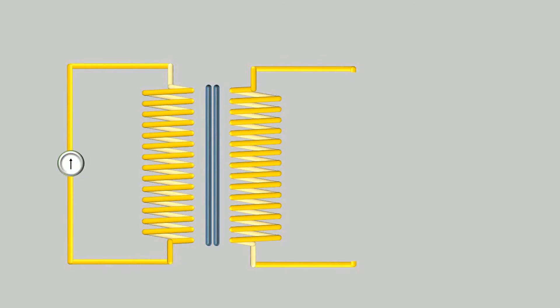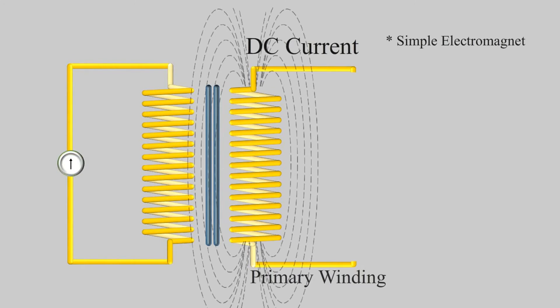Coming to transformers. If we put DC current in the primary winding it will make a simple electromagnet with north and south pole on either sides.